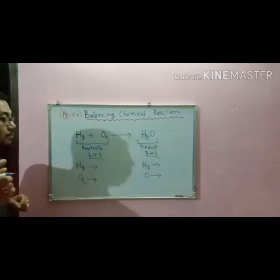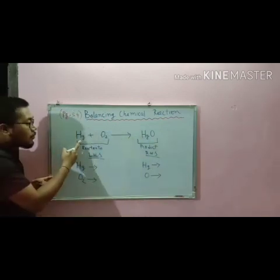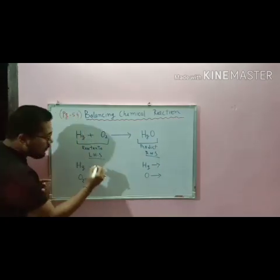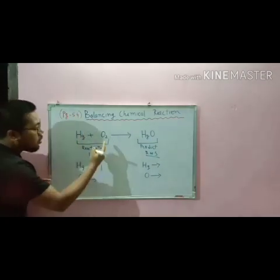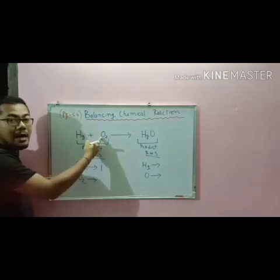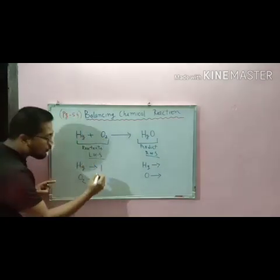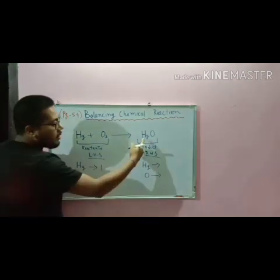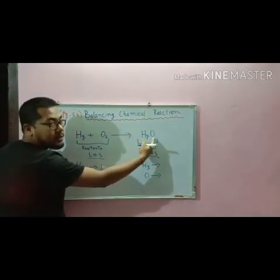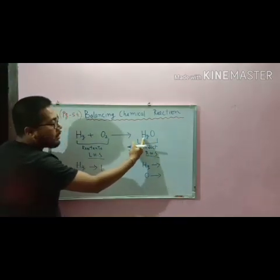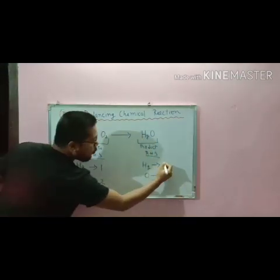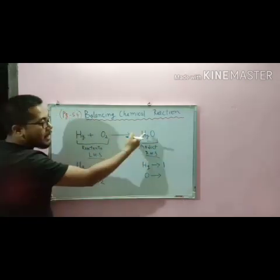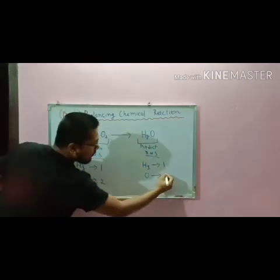Now see — mercury has how many atoms? One. Oxygen has how many atoms? Two. Here in mercury oxide, mercury has how many atoms? One. Oxygen has how many atoms? One.